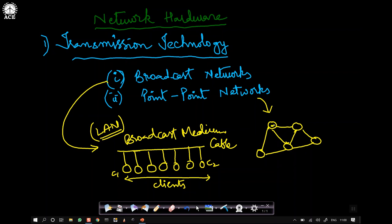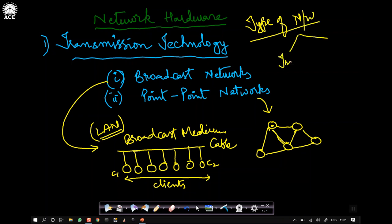For example, if this machine sends data, it will not be sent to all — it will be received only by the machine connected via that specific communication channel. If I send over this link, only this machine will see it. That is the fundamental difference between broadcast and point-to-point networks. Always remember, the type of network is governed by two things: transmission technology, which we just discussed, and the scale of the network — meaning the size.